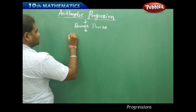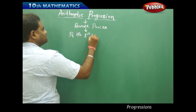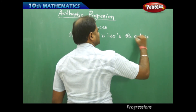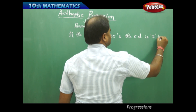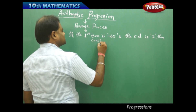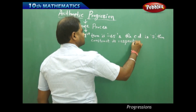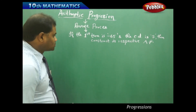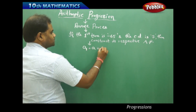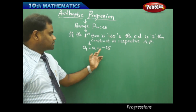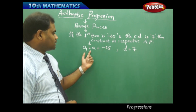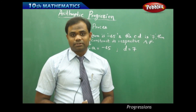The question is: if the first term is minus 65 and the common difference is 7, how do I construct the arithmetic sequence and its respective arithmetic progression? So the first term A1, denoted by A, is minus 65, and the common difference D is 7. The question is to construct the respective arithmetic progression.